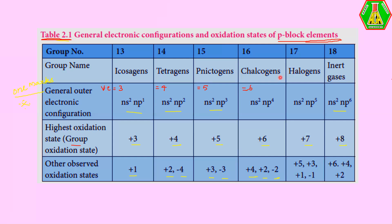Group 17 is called the halogens. The valence electron count is 7, so the general outermost electronic configuration is ns²np⁵. The group oxidation state is +7, and other observed oxidation states are +5, +3, +1, and −1. For group 18, the noble gases, the valence electron count is 8 and the configuration is ns²np⁶. The group oxidation state is +8, with observed states +6, +4, and +2. Group 18 elements are the most stable in the P-block.